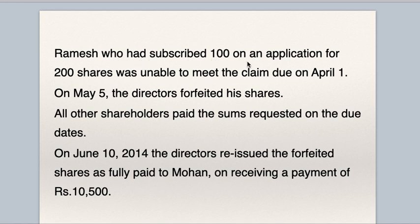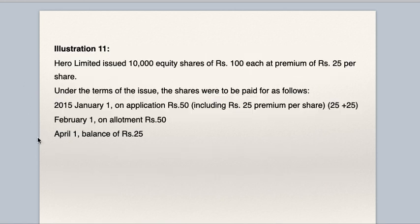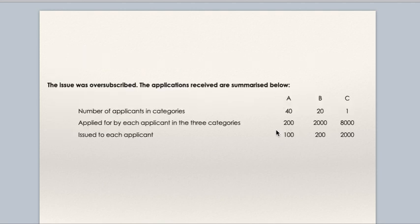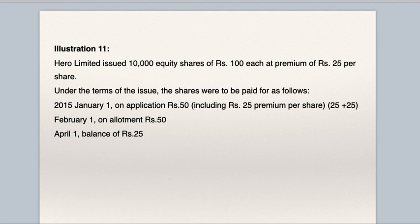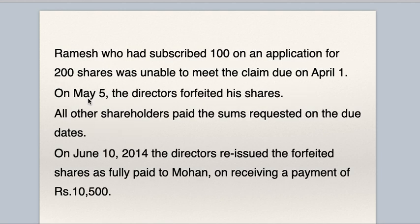Ramesh, who had subscribed Rs. 100 on an application for 200 shares, was unable to meet the claim due on 1st April. Ramesh applied for 200 shares and has been allotted 100 shares. He was unable to meet the claim due on 1st April. What is the amount due on 1st April? Only call money is due, which is Rs. 25 per share, which he has failed to pay. He is in category A. He applied for 200 shares whereas he has been allotted 100 shares, and he has not paid the call money due on 1st April. On May 5th, directors forfeited his 100 shares.